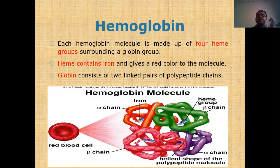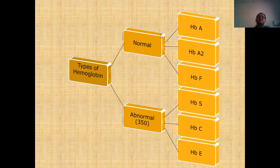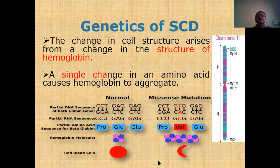Each hemoglobin molecule is made up of four heme groups surrounding a globin group. Heme contains iron, which gives blood its red color. The globin consists of two linked pairs of polypeptide chains. There are two types of hemoglobin: normal and abnormal. Normal types include hemoglobin A, hemoglobin A2. Abnormal types include hemoglobin S, C, and E.